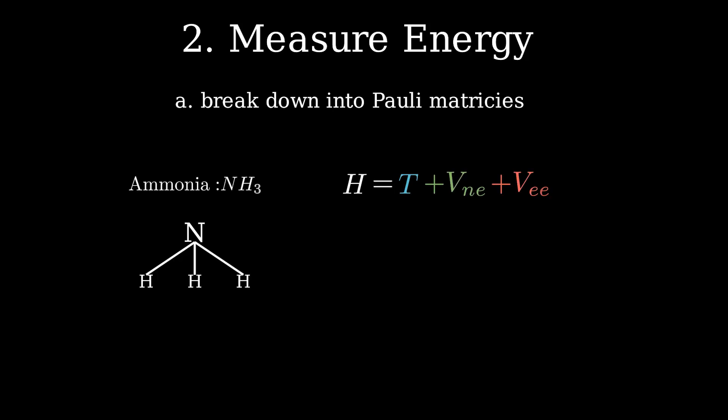For the molecule, the Hamiltonian contains all of the information about where the atoms are placed, how the electrons repel each other, how they're attracted to the nuclei, and so on. Pauli matrices are a set of a few simple matrices with nice properties. In the case of VQE, Pauli matrices tell us what axis to measure each qubit along.